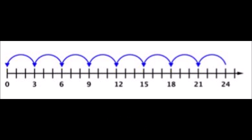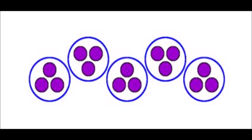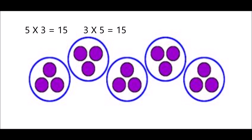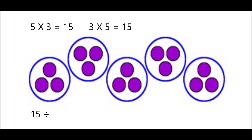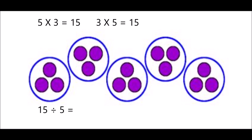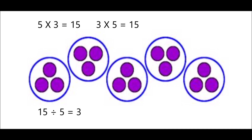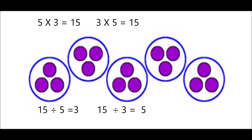Last one — let's write the fact family this picture represents. I see five groups of three objects, so five times three equals 15. Then three times five equals 15. For division: 15 divided by five equals three, or 15 divided by three equals five. All of them are part of my fact family.